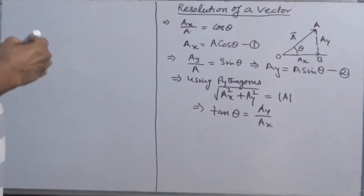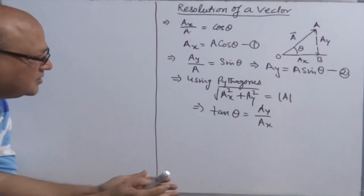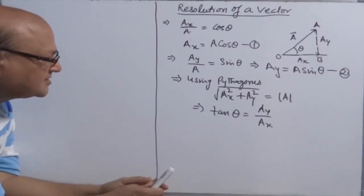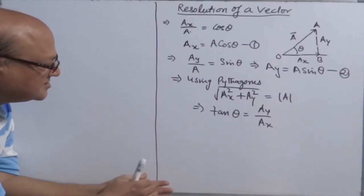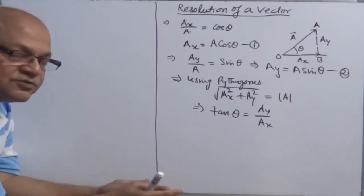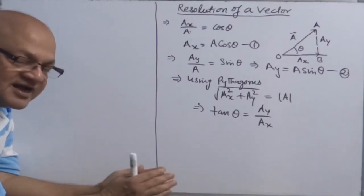Now you can build in your mind one small concept to resolve the vector. The direction with which a vector, a resultant vector makes an angle theta, in that direction we always have cosine component. And perpendicular to the cosine component, we will have sin theta. But you have to ensure that resultant of both the components must be equal to actual vector.